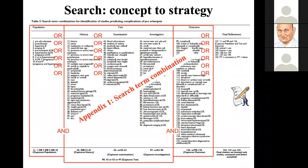The point here is that this type of detailed information concerning how terms were identified and combined needs to be summarized somewhere in the paper. Usually there isn't space in the main manuscript, so this detail can be provided in Appendix 1.